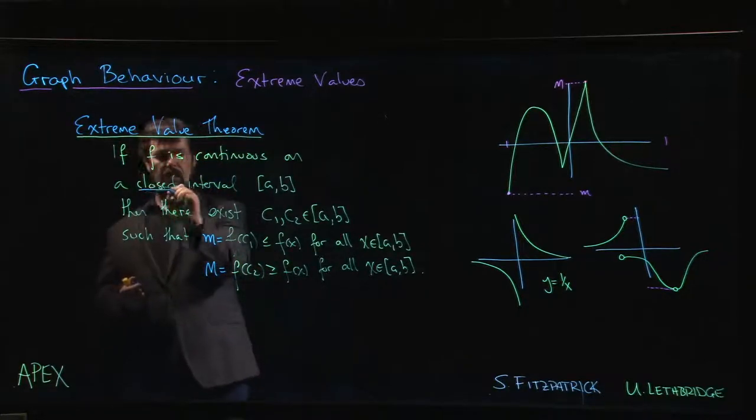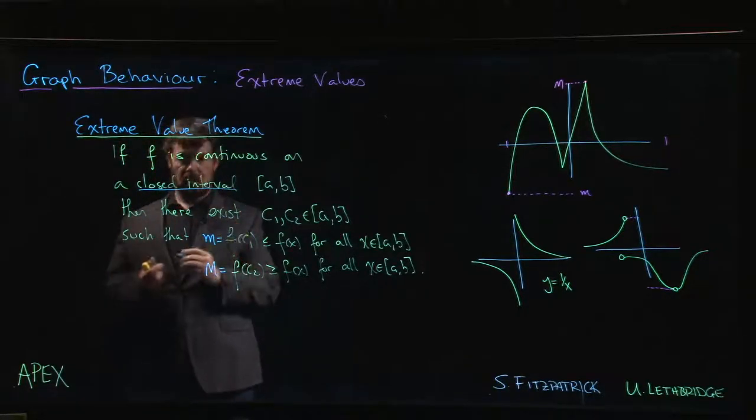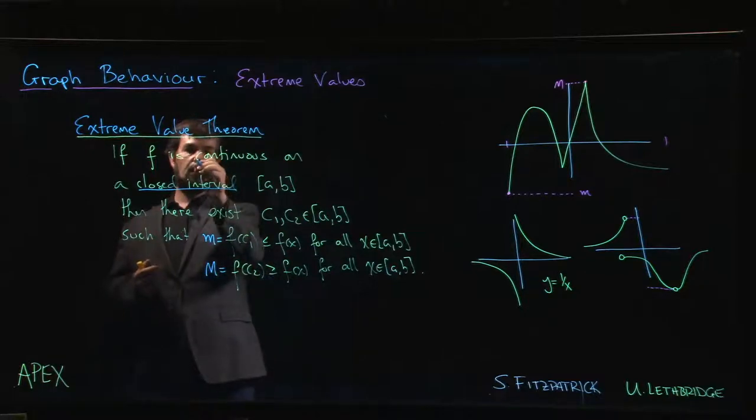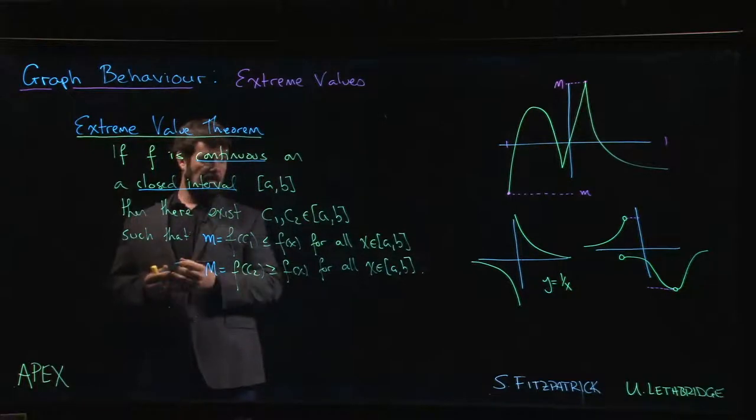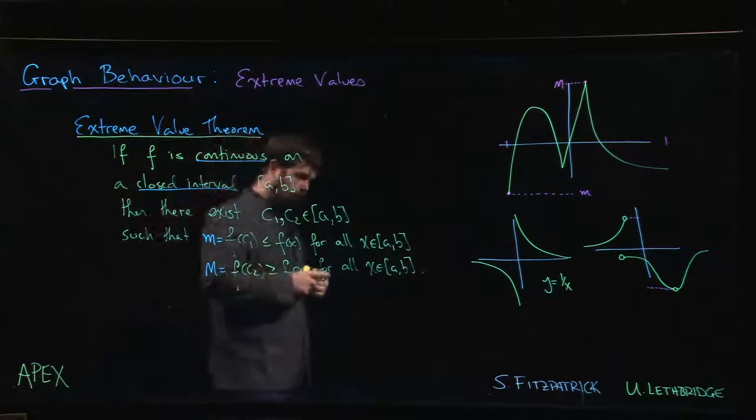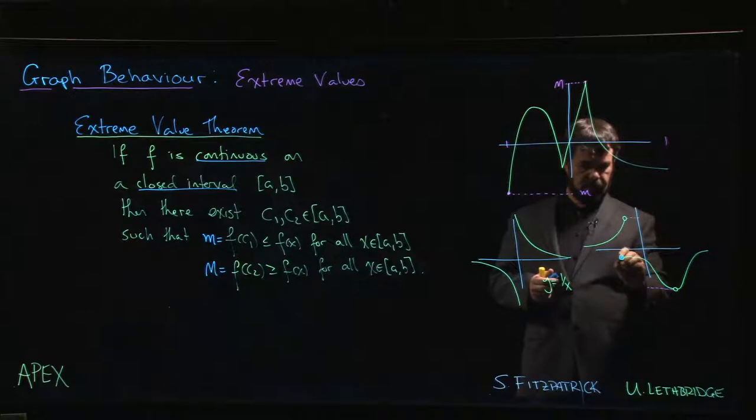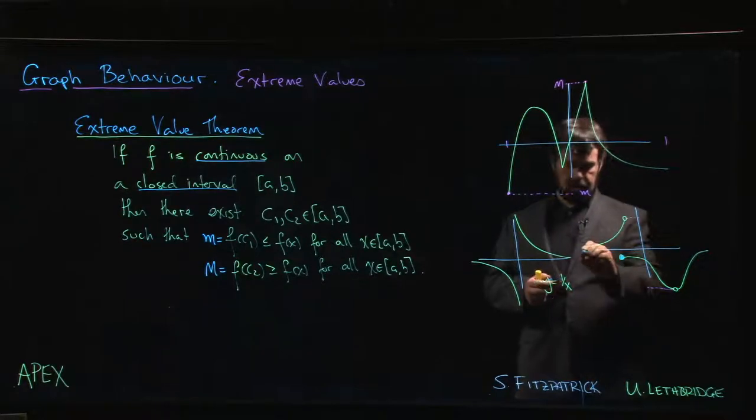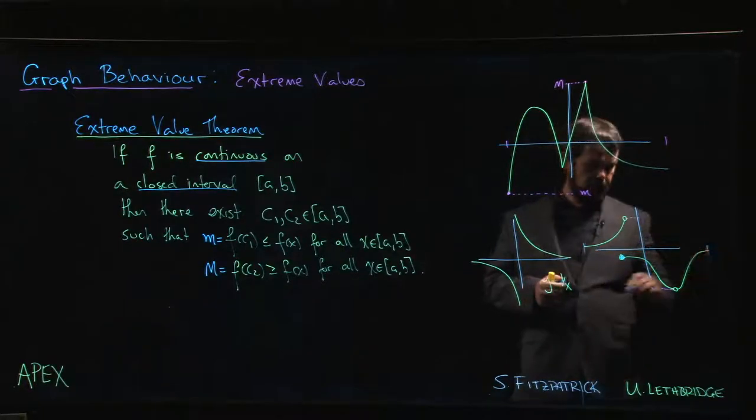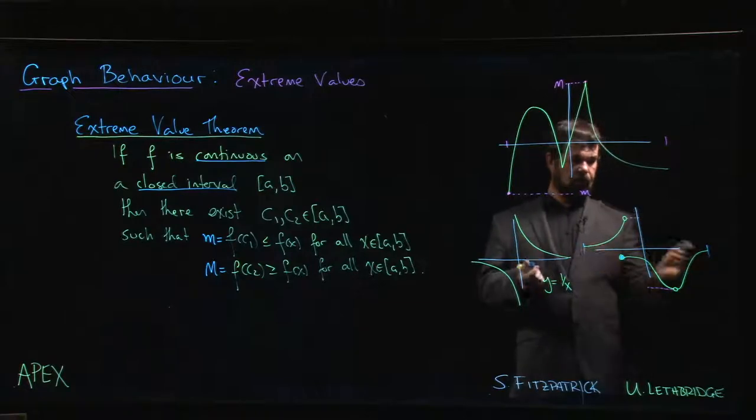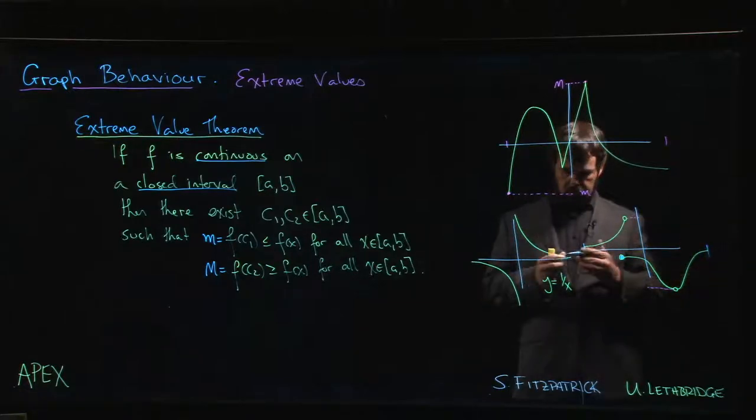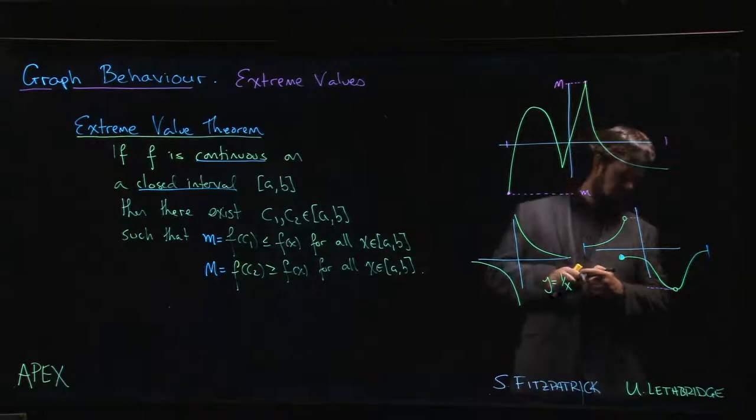And it's very important here that the interval is closed and the function is continuous. Otherwise, it's not very hard. Maybe like over here, we could fill in that point. We could define it there, make that our domain. Here's a function which is defined on a closed interval, but it doesn't have a maximum or a minimum. I guess I have to redefine it here. Maybe it's defined there or something like that.